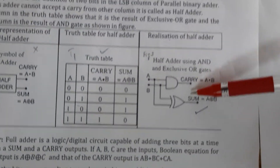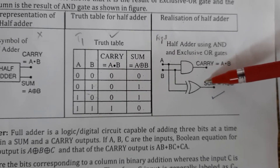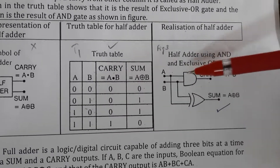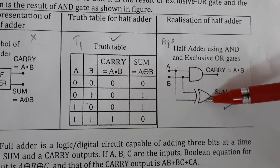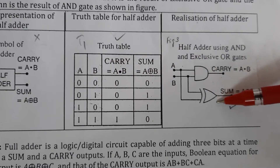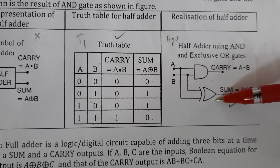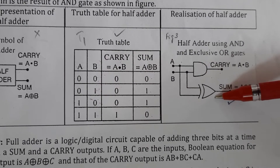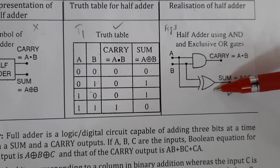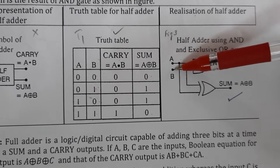The half adder circuit is shown in this figure. Half adder is constructed using an AND gate and an XOR gate. We require 1 AND gate and 1 XOR gate to construct a half adder. Basically, a half adder is a digital circuit which adds 2 digital inputs.